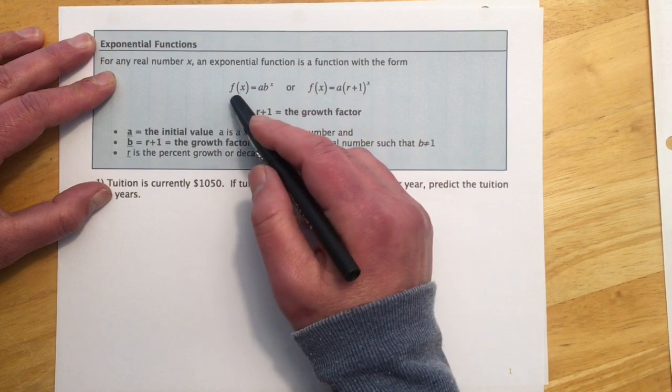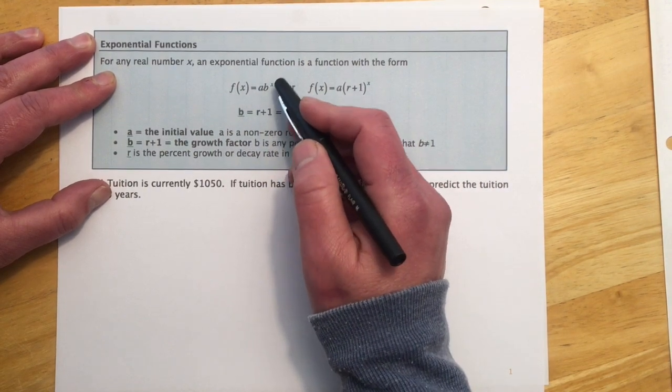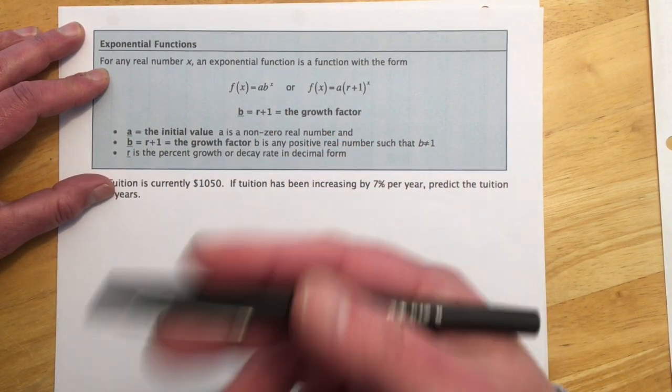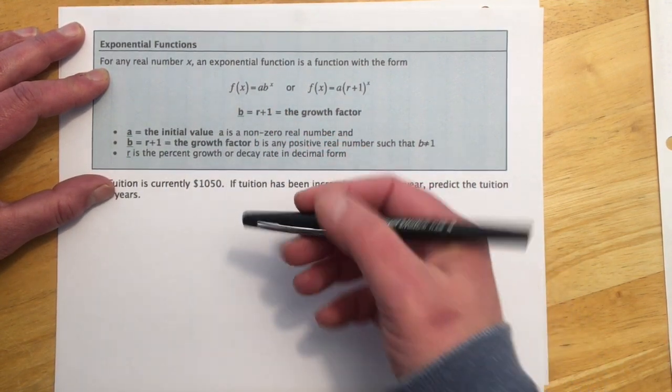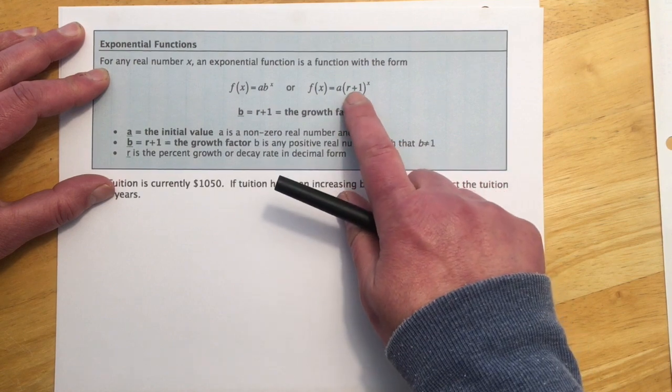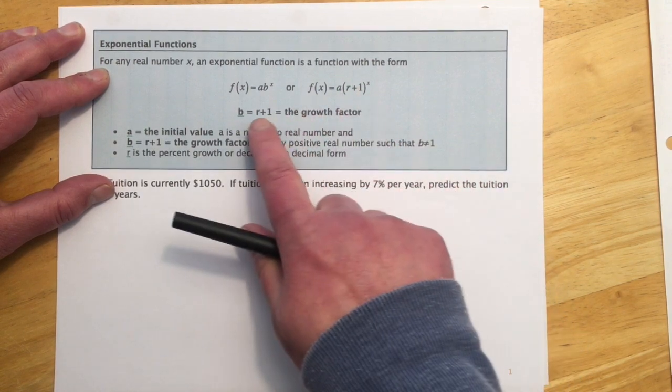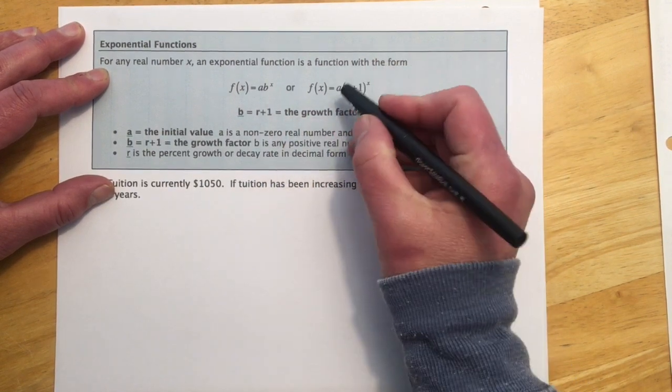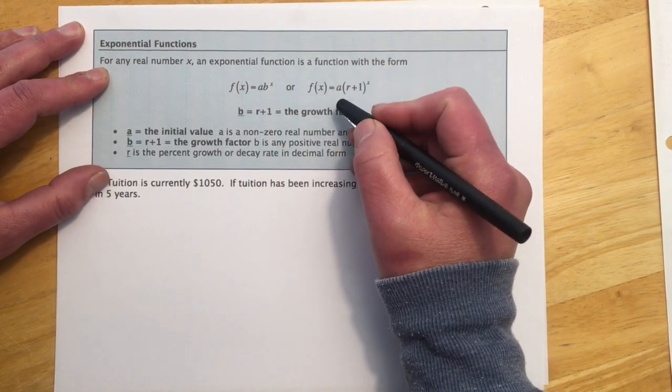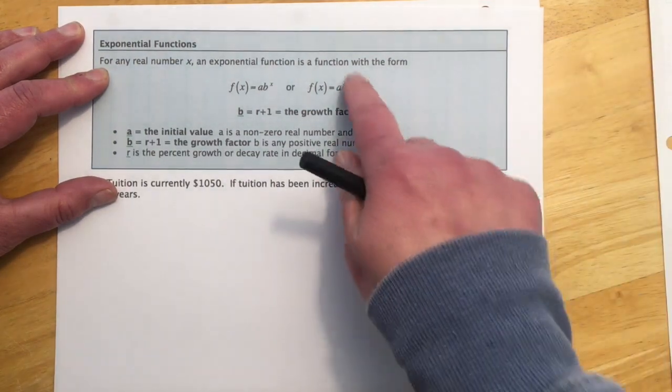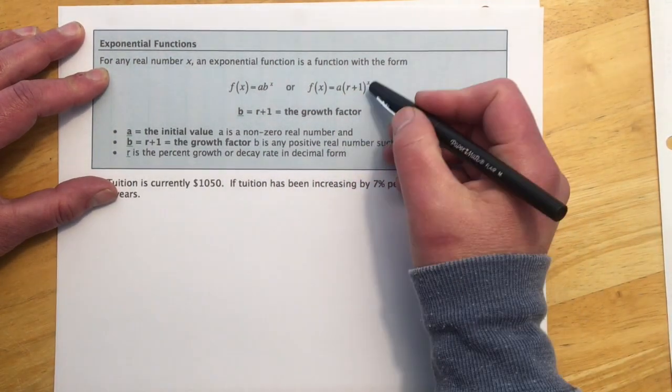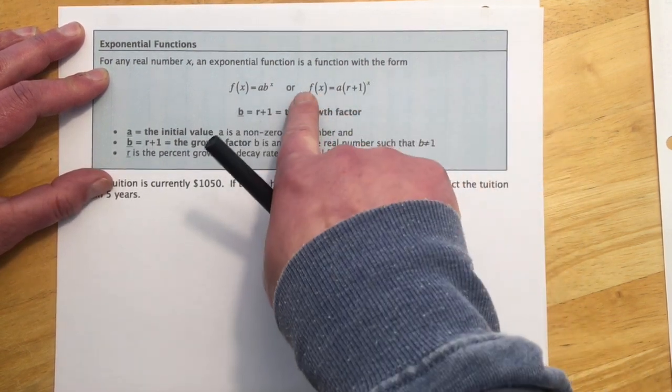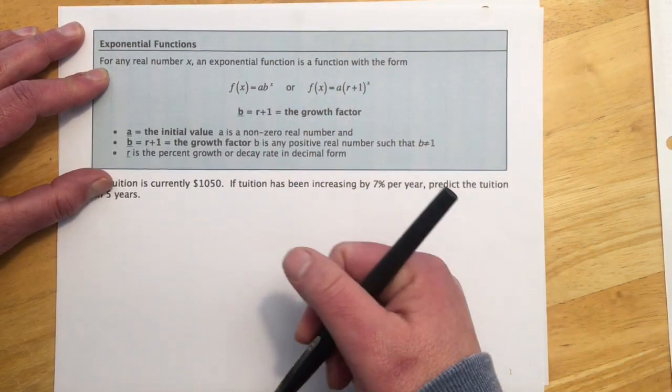So our general form is f(x) = ab^x, and this is good when you have ordered pairs or if the language is something that's doubling or tripling. This other version of it just has it as r+1, and this b is r+1, it's called the growth factor, and r is like the rate, like the 17% per year increase, the 17% goes in there. X is very often time, and then f(x) is just what we get out as a function of that time.